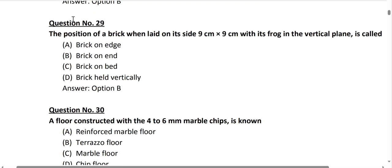Question number 29: the position of a brick when laid on its 9 cm x 9 cm face, placed vertically in the vertical plane, is called a brick on end. Option D is correct.